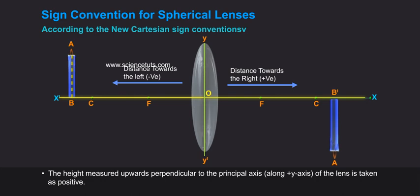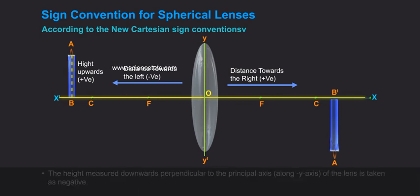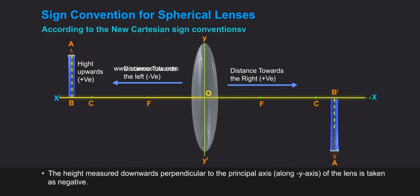The height measured upwards perpendicular to the principal axis along plus y-axis of the lens is taken as positive. The height measured downwards perpendicular to the principal axis along minus y-axis of the lens is taken as negative.